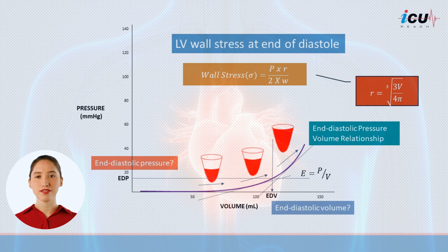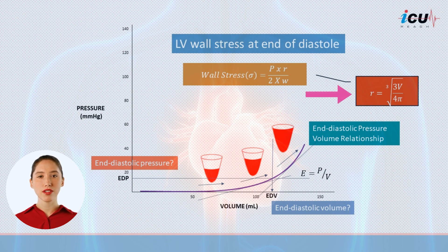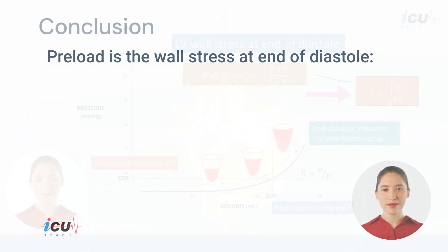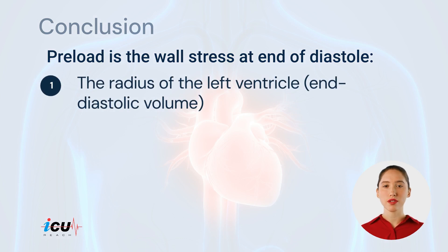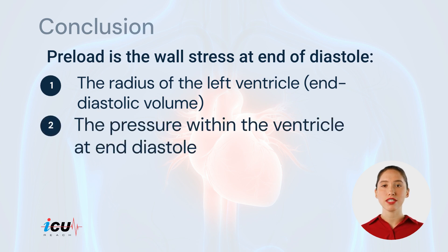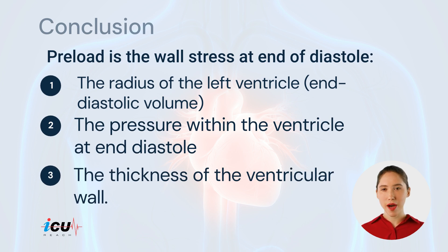The volume of the left ventricle can be calculated from the radius, assuming the left ventricle is a sphere, by the formula shown in the red box. Wall stress is typically measured in millimeters of mercury. In conclusion, preload is defined as the wall stress on the left ventricle at the end of diastole, and is determined by three critical factors: the radius of the left ventricle (which corresponds to end-diastolic volume), the pressure within the ventricle at the end of diastole, and the thickness of the ventricular wall.